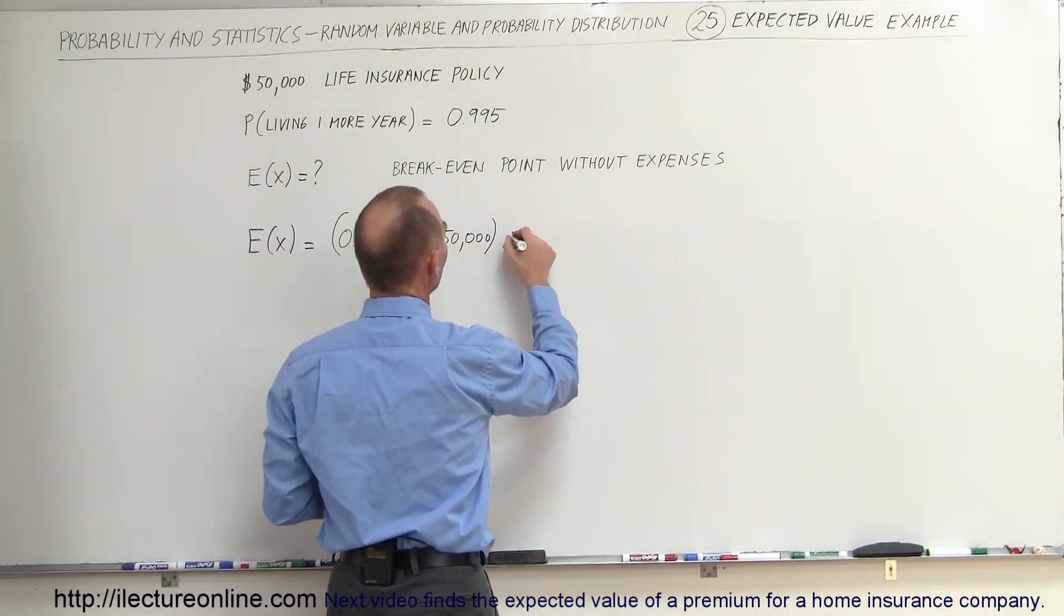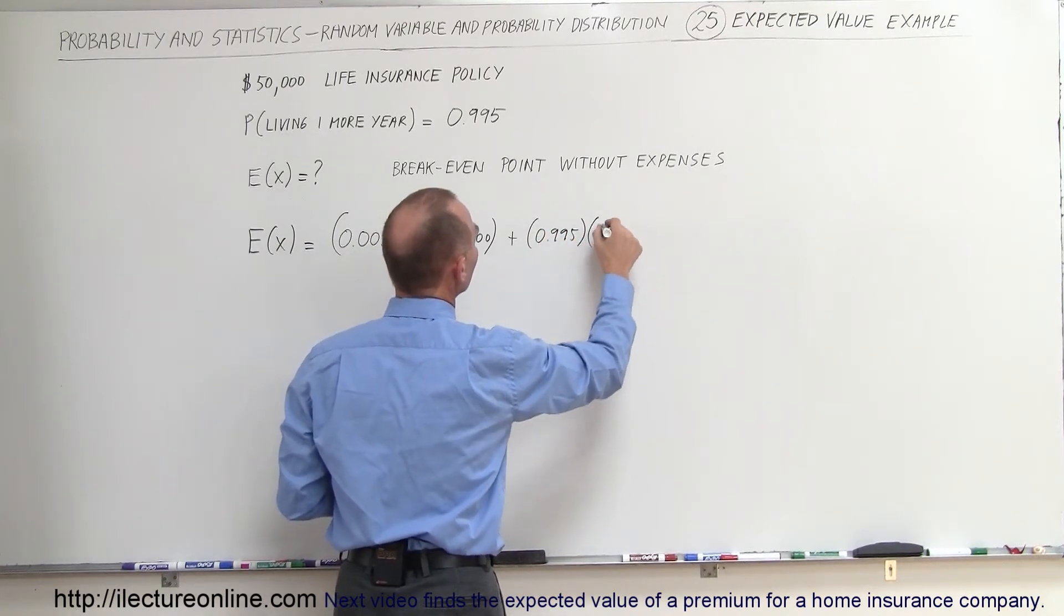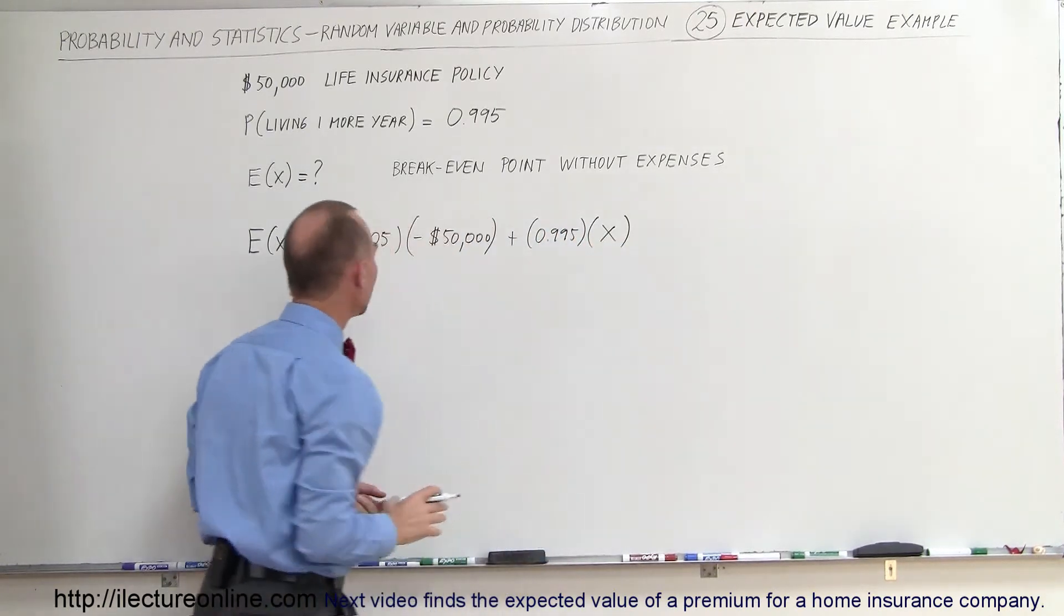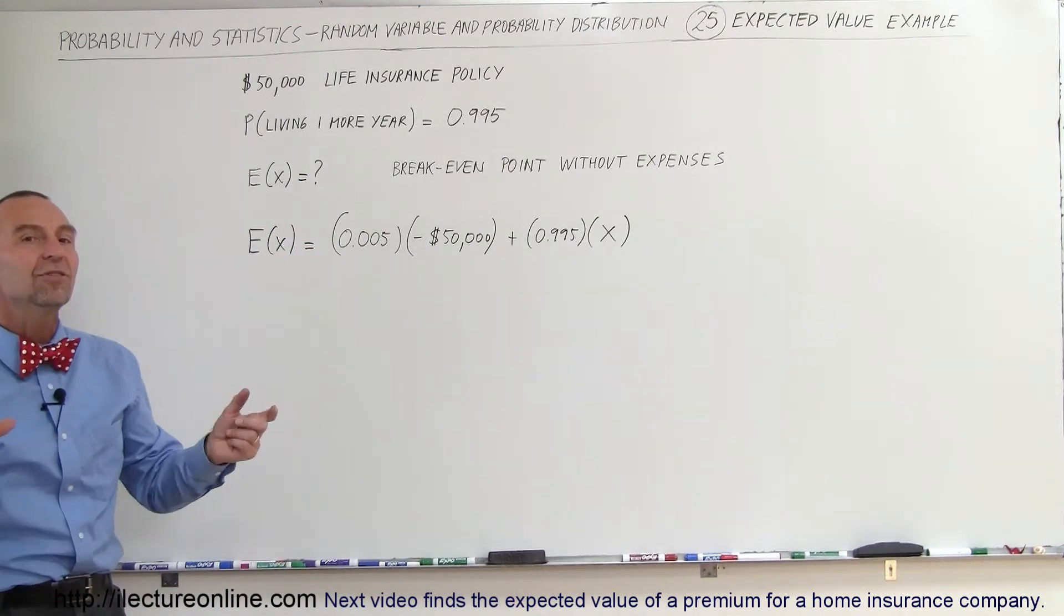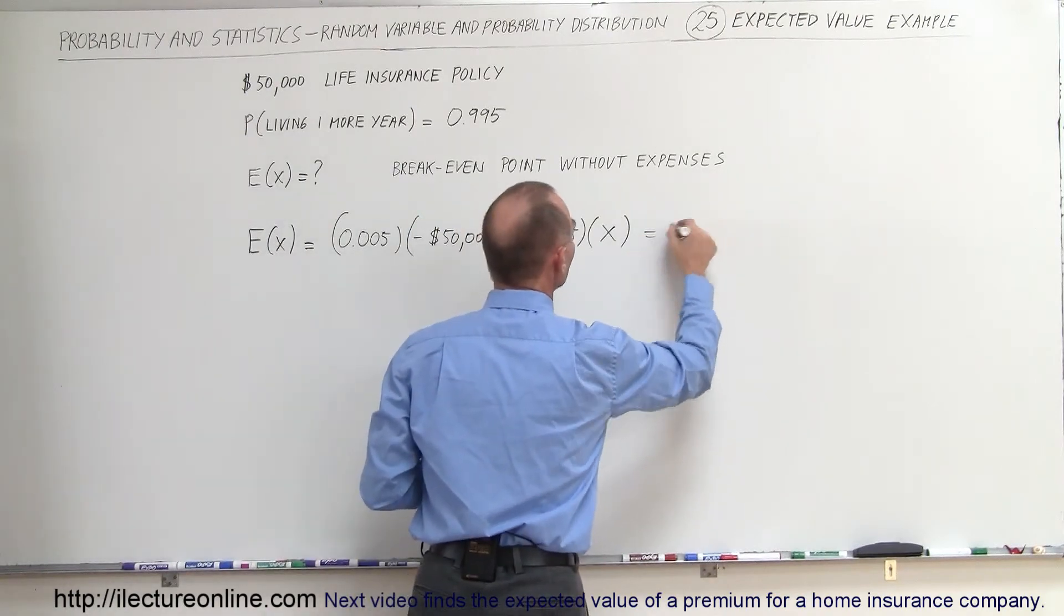That would be plus the probability, which is 0.995 times the premium that we have to pay, and they want that to be even-steven, meaning they would have no money left out if they break even, so that would have to be equal to zero.